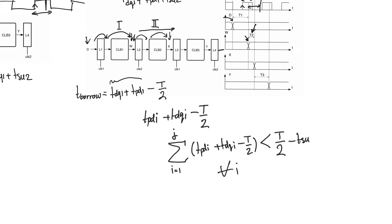Why do we do all this? It is more complicated than a registered pipeline. We do it because when we have a fast path and a slow path, we allow the fast path to make up for what the slow path is doing — the slow path borrows slack created by the fast path. This allows a latch pipeline to operate at a frequency close to the average of all paths, whereas a registered pipeline must operate at the frequency the slowest critical path allows. When paths have disparate propagation delays, a latch pipeline always gives better performance.